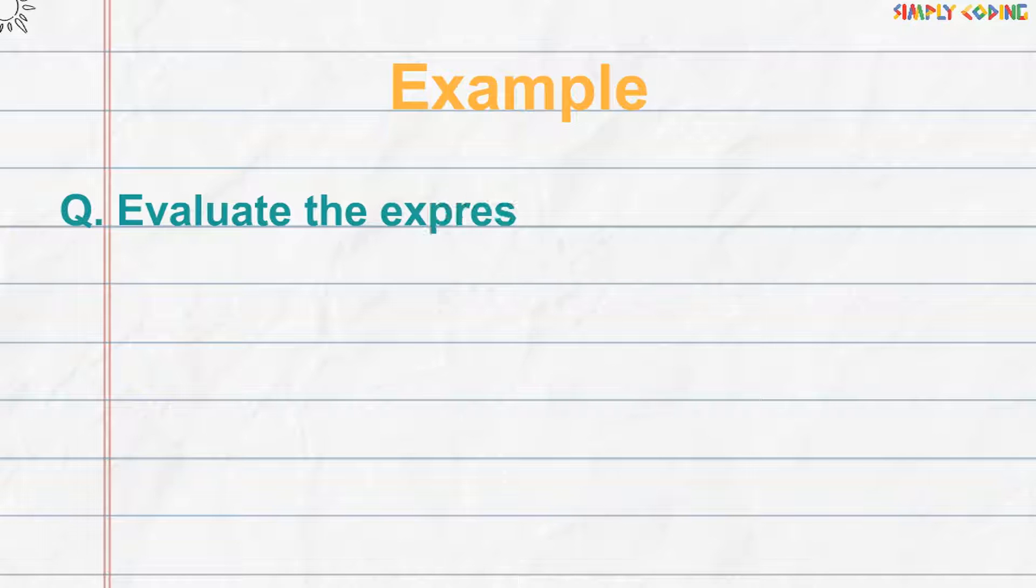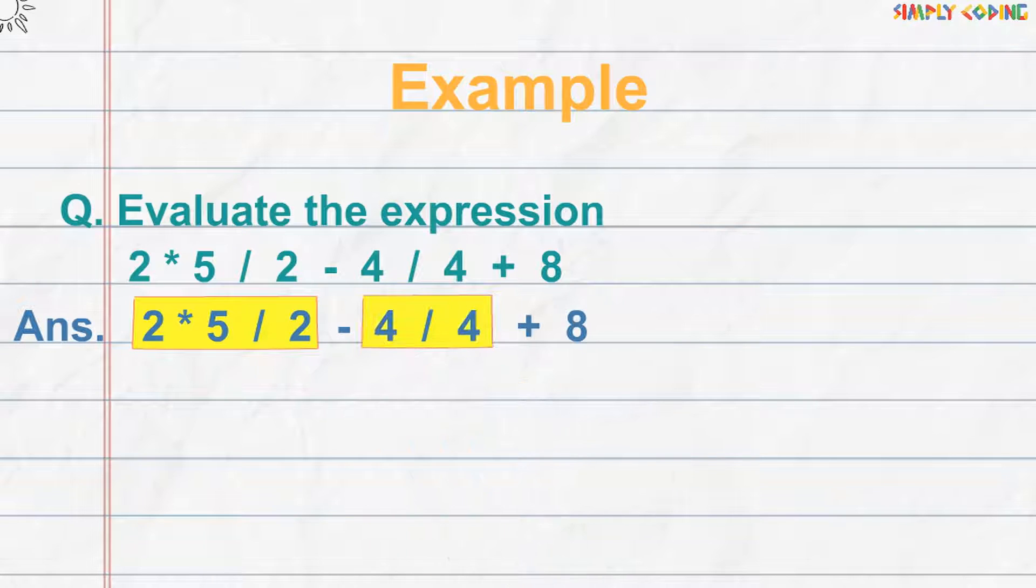Now let's see some example questions that can be asked on this. You would be given an expression and asked to evaluate it as per precedence rules. Let's take this as an example. Here multiplication and division have higher precedence, so those will be evaluated first. In cases where two operators have the same precedence, it is evaluated as per associativity of left to right.